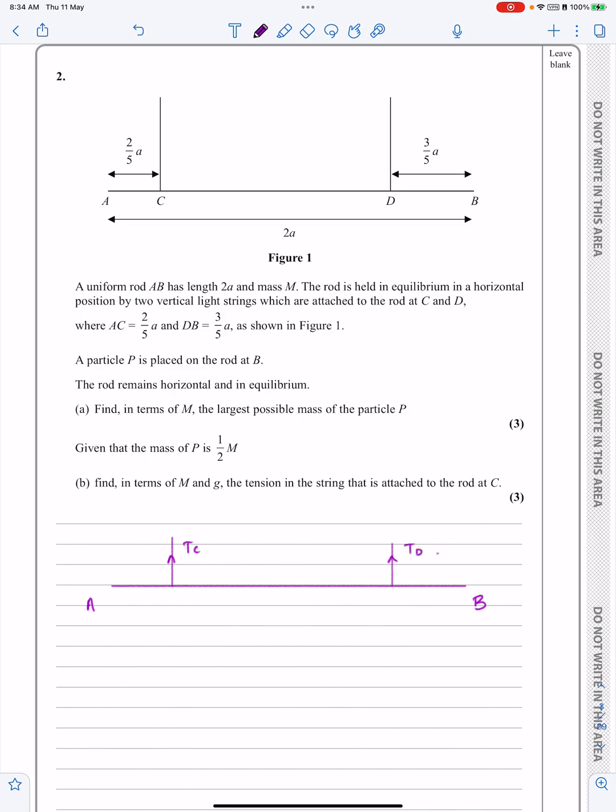They've told me that this is two-fifths A in the question. And they tell me that the rod is uniform and has mass M. So I know Mg is going to be acting down there. Capital Mg is going to be acting down there. And that acts at the halfway point. So that acts at A, which means that's got to be three-fifths A there. And this is two-fifths A, because this is three-fifths A here.